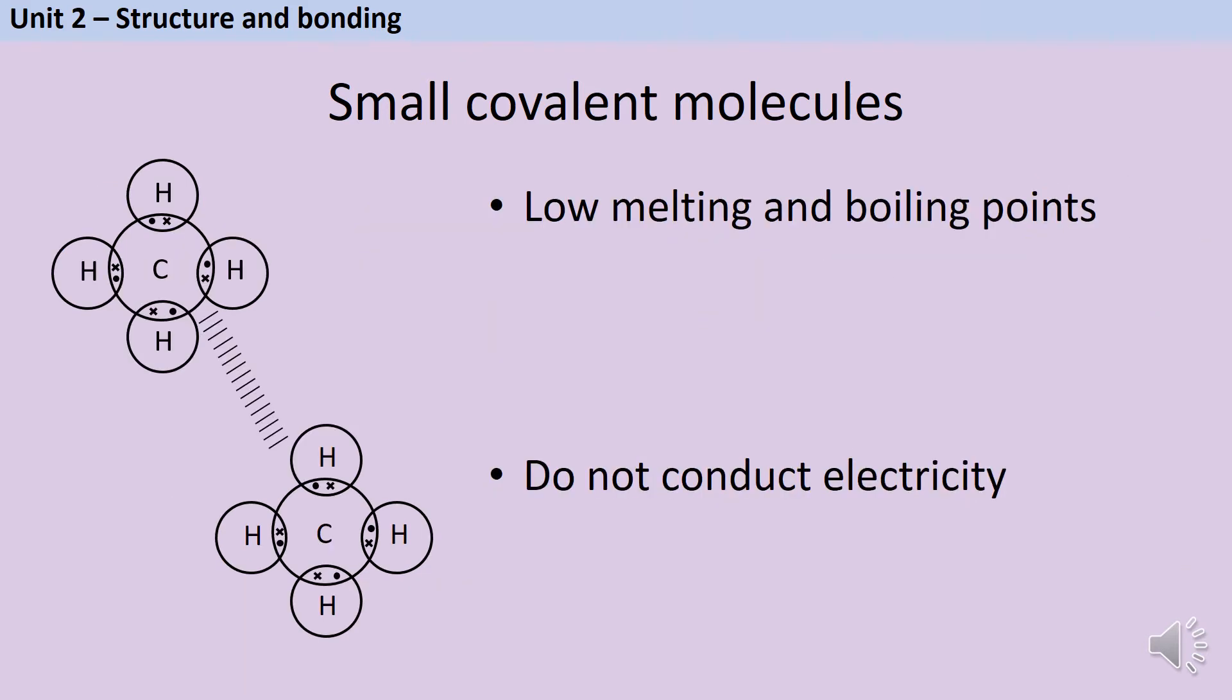The two physical properties you need to know for small covalent molecular substances are that they have low melting and boiling points and therefore they're often gases or liquids that easily boil at room temperature and that they don't conduct electricity.